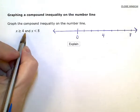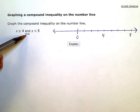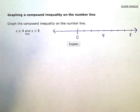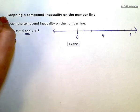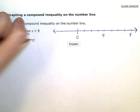So this compound inequality is an and inequality. Which means that my graph is going to deal with the numbers in between four and eight.